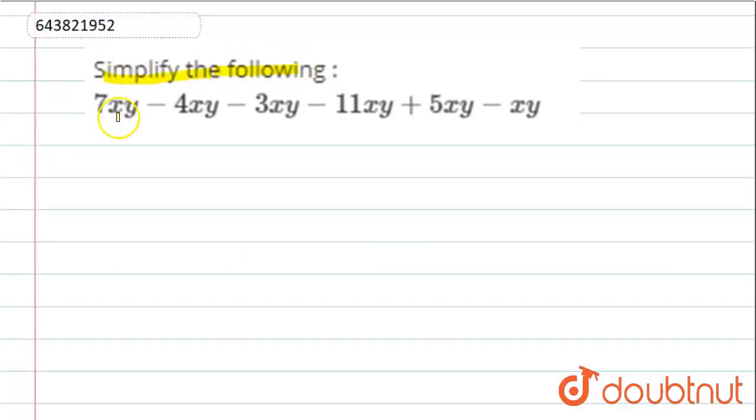In this question, simplify the following: 7xy minus 4xy minus 3xy minus 11xy plus 5xy minus xy.